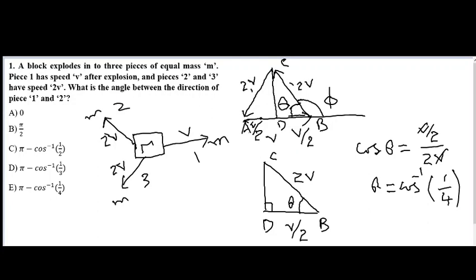And this phi here can be written as pi minus theta. As from this point to this point the whole angle is pi. And if we subtract theta from this pi, then we will get phi. Using the value of theta here, we have angle phi as pi minus cos inverse of 1 over 4, which is option E. So E is the correct angle for this case.